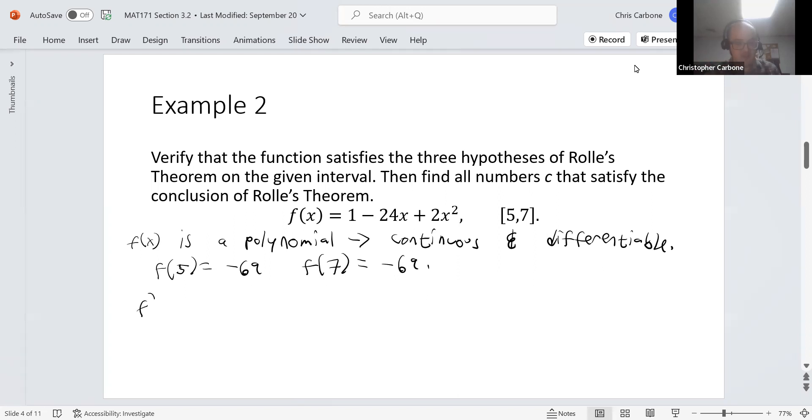If we were to take the derivative of f of x, we get negative twenty-four plus four x. And we could set that equal to zero. When we do, we just get a value of x to be six. And if we specifically look at the value of six, we get that value of zero as we just solved. So because of that, we do have that number c by Rolle's theorem to be the number six.